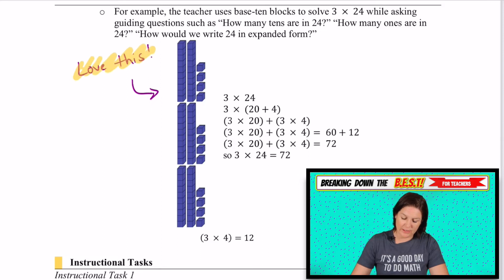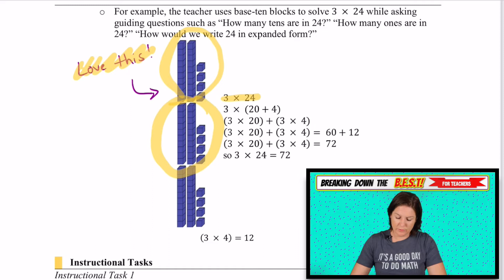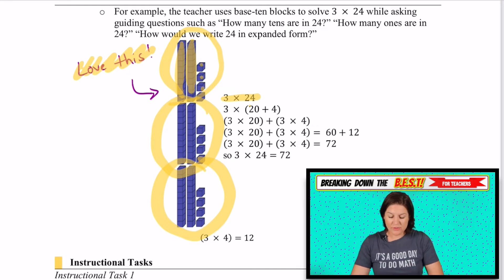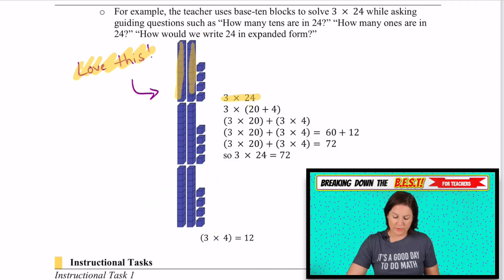And I said here that I love this. I love how we're saying, okay, three times 24. If we were to model this with place value blocks, that would be three groups. One, two, three of 24. We've got two tens and ones. And naturally, if you were to say to students, how would you count these up? They probably would say, we have 10, 20, 30, 40, 50, 60.